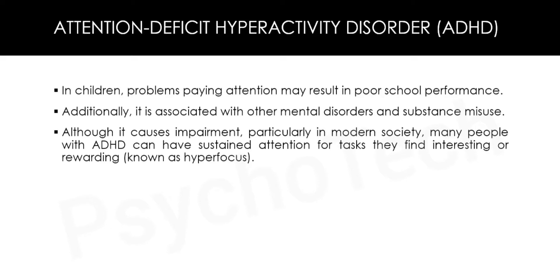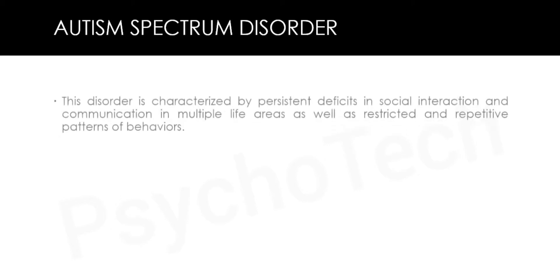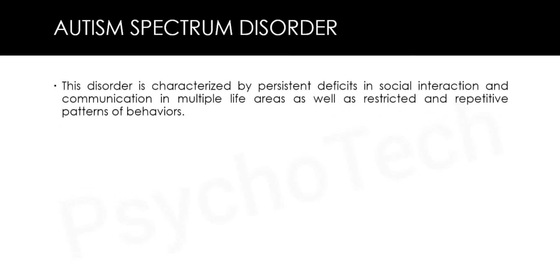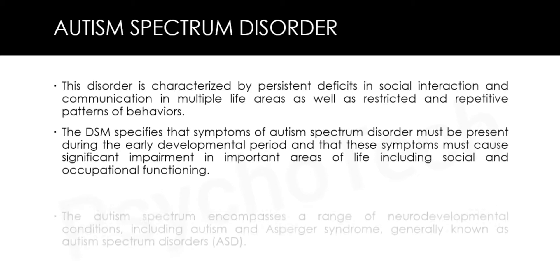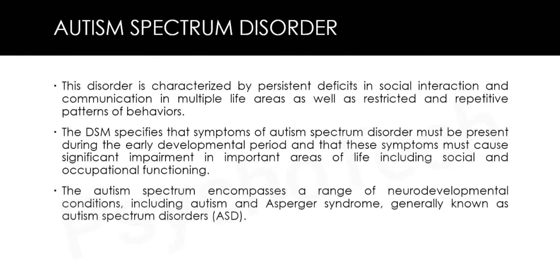The next type is autism spectrum disorder (ASD). This disorder is characterized by persistent deficits in social interaction and communication in multiple life areas, as well as restricted and repetitive patterns of behaviors. The DSM specifies that symptoms must be present during the early developmental period and must cause significant impairment in important areas of life, including social and occupational functioning. The autism spectrum encompasses conditions including autism and Asperger syndrome.